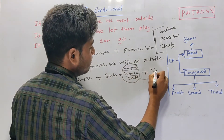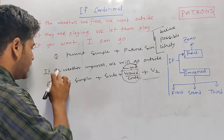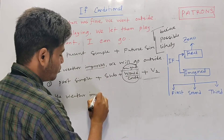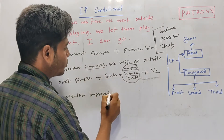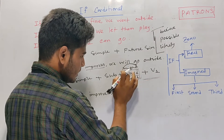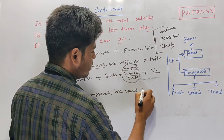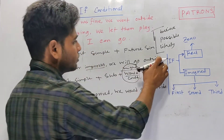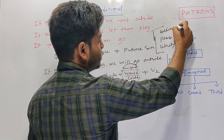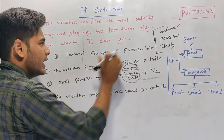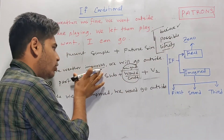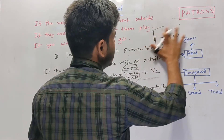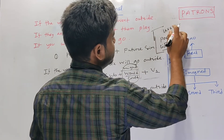The verb is based from the verb. If the weather is improved, we would go outside. If the weather is improved, we will go outside. But the second condition is less possible, less likely.